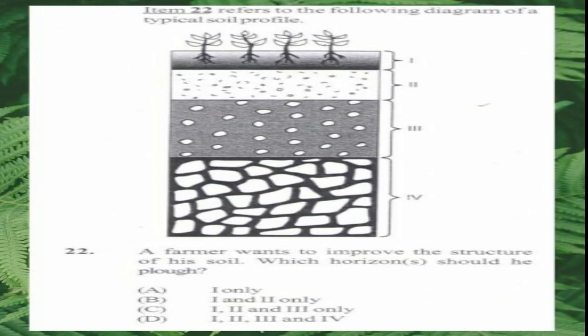Question number 22. Item 22 refers to the following diagram of a typical soil profile. A farmer wants to improve the structure of his soil. Which horizons should be ploughed? A. One only, B. One and two only, C. One, two and three only, D. One, two, three and four. The answer is C, one, two and three only. You want to break the three layers, including the hardpan which is in horizon B — breaking that cement of nutrients to bring them to the surface and create more drainage.